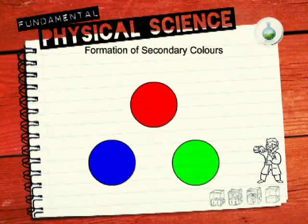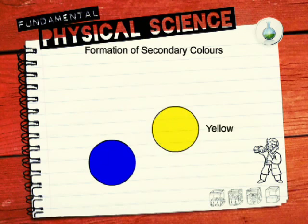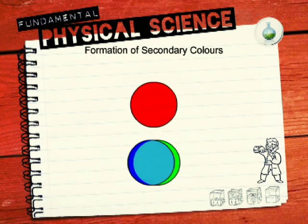We can also combine the primary colours in three other combinations to form three new colours. Red and blue light combine to form magenta. Red and green light combine to form yellow. Green and blue light combine to form cyan. As magenta, cyan and yellow are made by combining the three primary colours in different combinations, they are known as secondary colours.